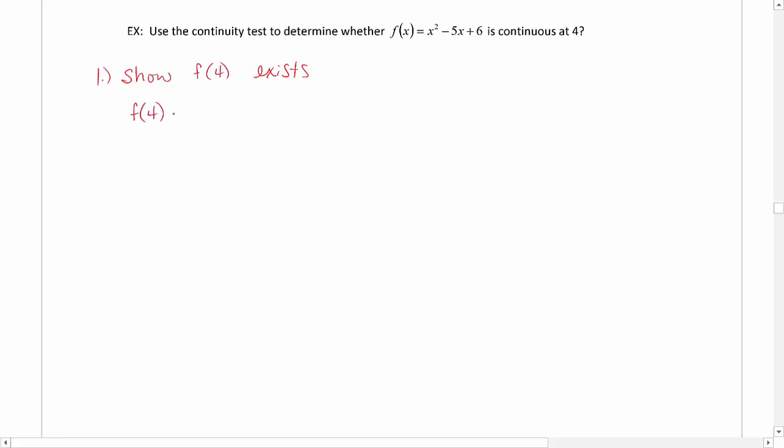And the way we do that is just by plugging 4 into our function. If you had something with a variable in the denominator or something, you might have it where it didn't exist or a log.